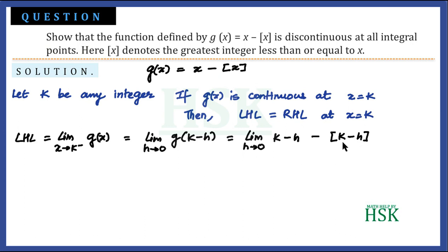For example, if k = 3 and we subtract a finite value h from 3, we get a number less than 3 — something like 2.99. So the greatest integer value of (3 − h) equals 2. Similarly, the greatest integer value of (k − h) equals k − 1.